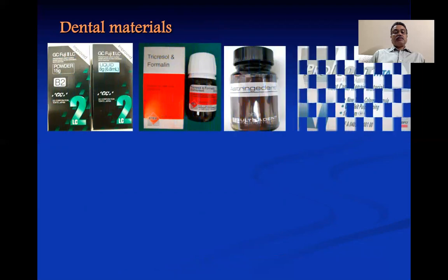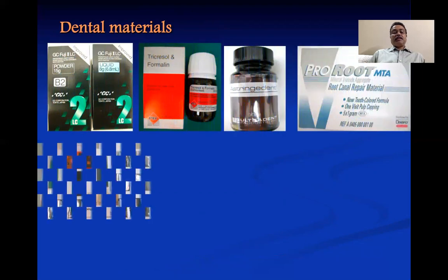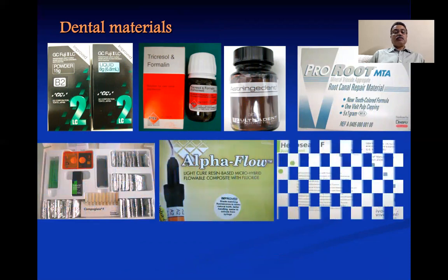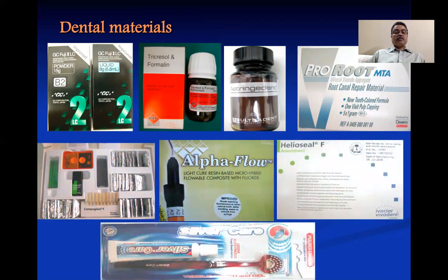Some of the materials used in pediatric dentistry — which are the same as those used in adult dentistry — include glass ionomer cements, formocresol, astringents, MTA, composites, resin composites, flowable composites, pit and fissure sealants, and various designs of toothbrushes. We should have thorough knowledge of all these materials used in pediatric dentistry.